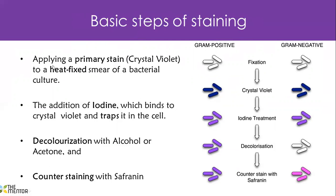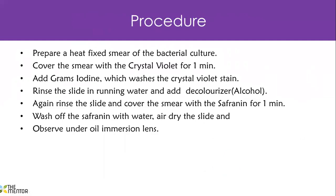The primary stain is crystal violet, and remember the sample has to be heat-fixed on a slide. Then iodine is added, which binds to the crystal violet and traps it in the cell. Then we decolorize with alcohol. In the lab procedure: we prepare a heat-fixed smear of the bacteria, cover it with crystal violet, then add Gram's iodine, then rinse in water, add alcohol, rinse again, cover with safranin, wash it off, air dry it, and observe it under a microscope — under oil immersion, which is the highest magnification used with a light microscope.